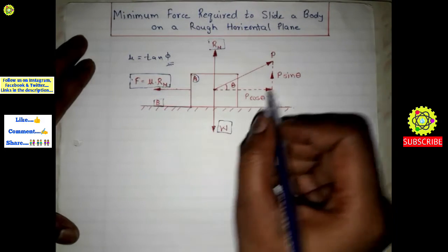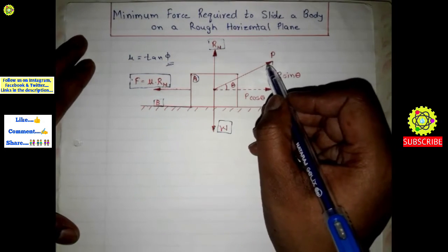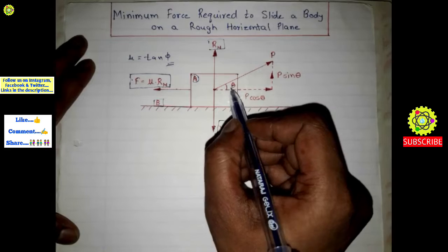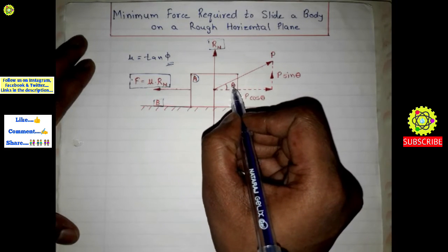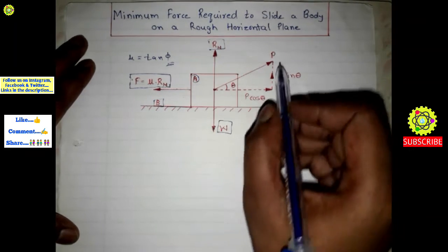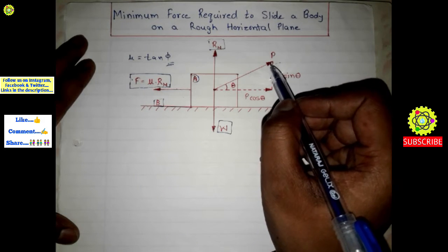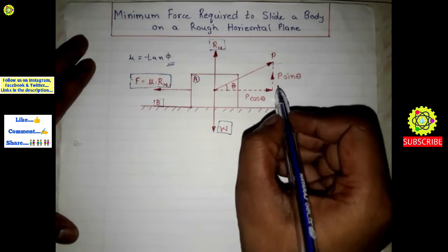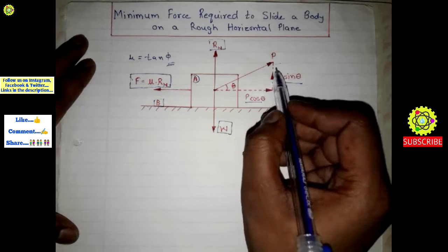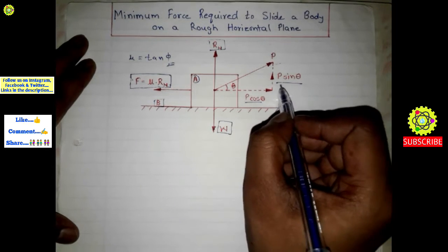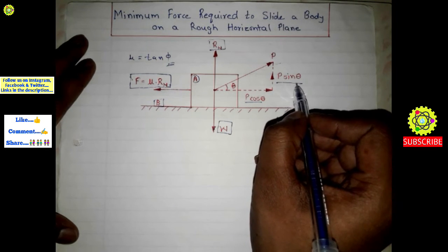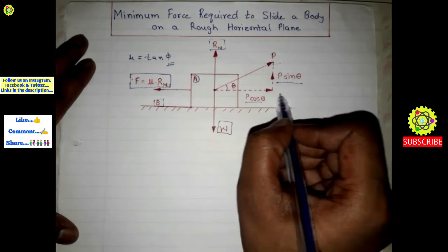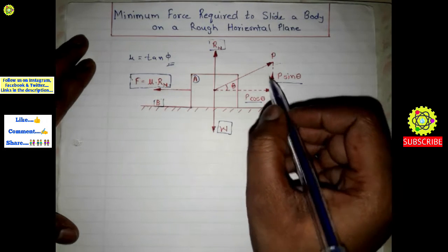This is an effort P which is applied at angle theta. This effort P is such that the body will just begin to move. These are the components of effort P: P sin θ acting upwards, and P cos θ acting in the rightward direction.